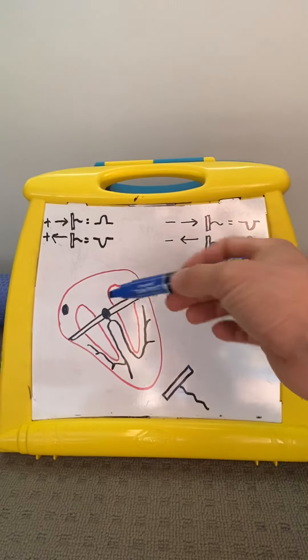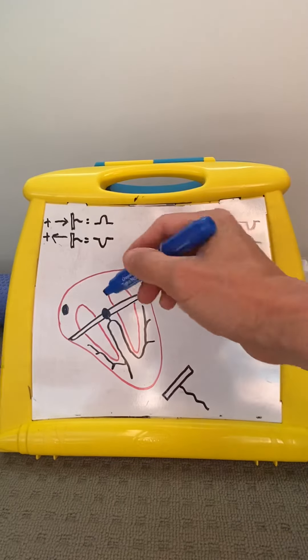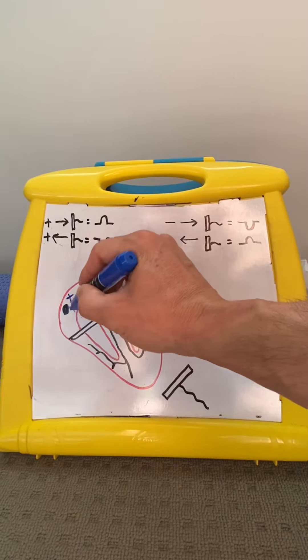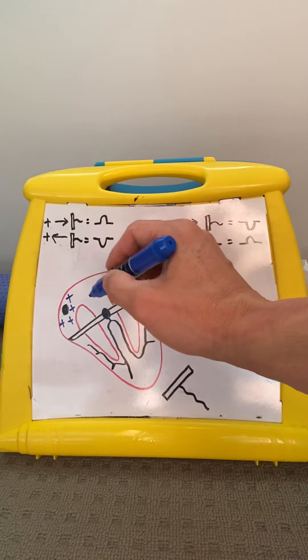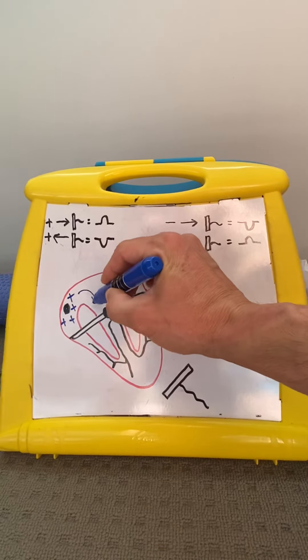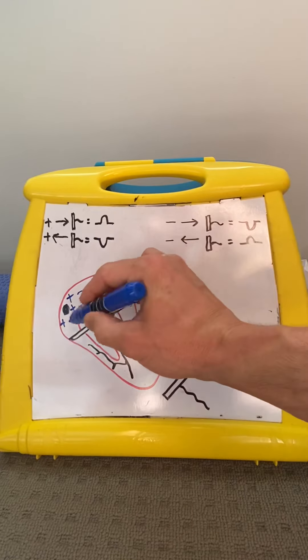So in order to begin, we start here at the SA node. It starts to make the cells around it positive, and this wave of positive cells spreads. This is called depolarization, and it moves in this direction through the atria.